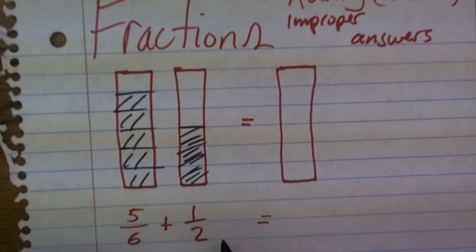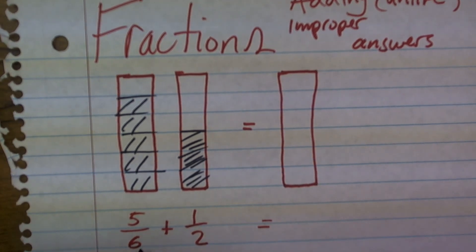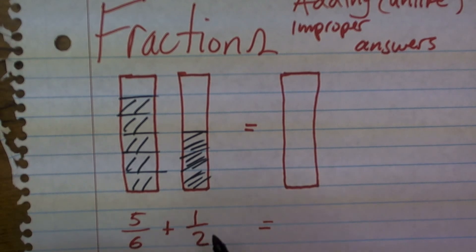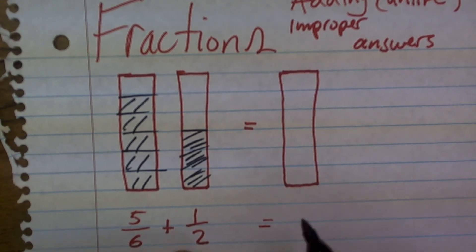So I need to look at it and say, what number can I get for six and two to be exactly the same? And what I notice is that two and six share the same multiple of six, meaning six goes into six one time, and two goes into six three times.